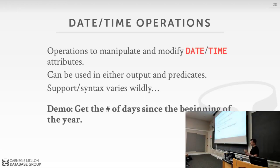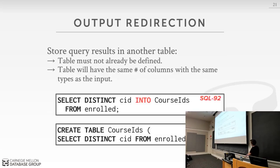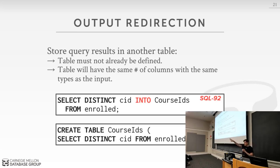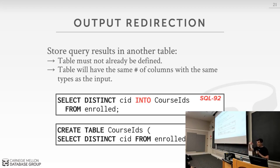The main takeaway: simple things are hard because there's no standard way to do things even though a standard specification exists. Now, instead of printing query output to the terminal, you might want to keep data inside the database for subsequent queries. Output redirection lets you write query results into a table. In the SQL standard, you use SELECT INTO — this creates the table on the fly based on the output schema.